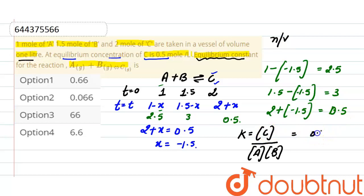Put the values here. Concentration of C at equilibrium is 0.5. Concentration of A here is 2.5, and concentration of B is 3.